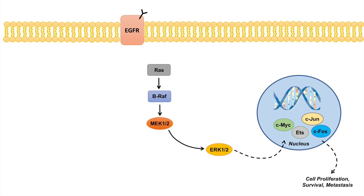So now that we know the basics of the pathway, how is the pathway actually regulated? Well, one of the main regulators of RAS at the beginning of the pathway is actually EGFR, or Epidermal Growth Factor Receptor. Now there are multiple Epidermal Growth Factor Receptors, including HER2, or Human Epidermal Receptor 2. Nonetheless, EGFR or HER2 will activate RAS by going through SOS and GRB2 proteins.